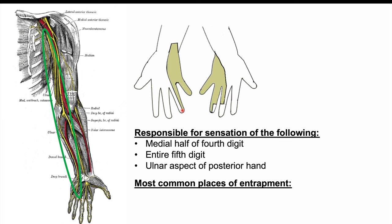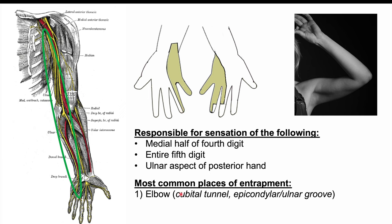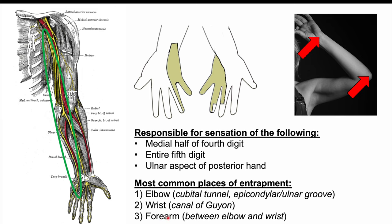Ulnar neuropathy occurs due to nerve entrapment. The most common place of entrapment is the elbow, in what is called the cubital tunnel — also referred to as the epicondylar ulnar groove — at the medial aspect of the elbow. The wrist can also be a location, where the ulnar nerve passes through the canal of Guyon to enter the hand. The forearm, between the elbow and wrist, is another possible entrapment site.